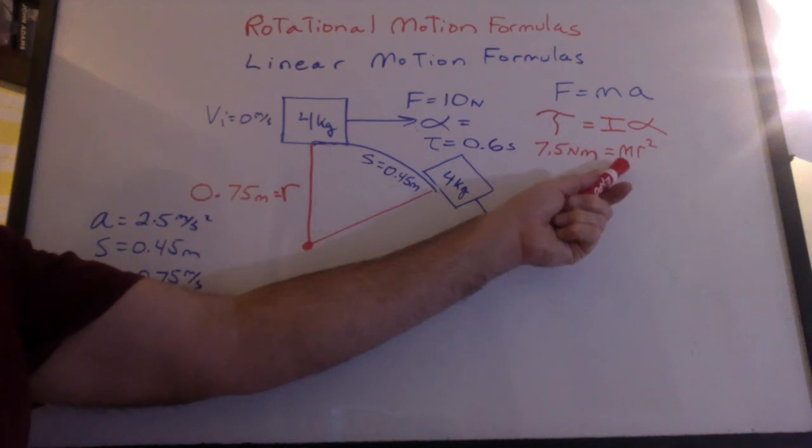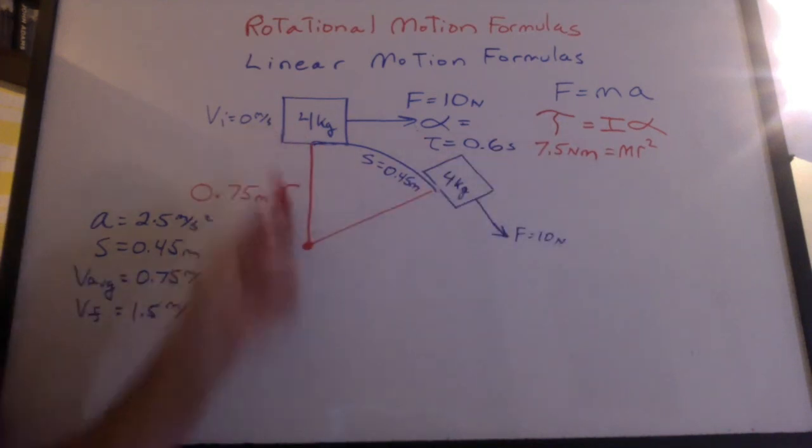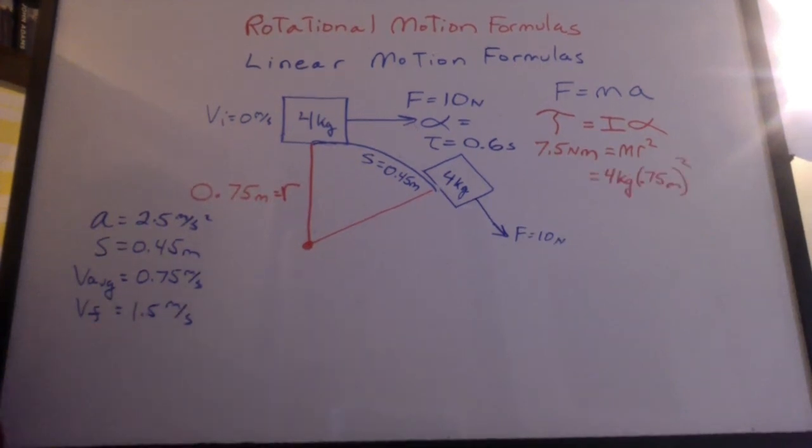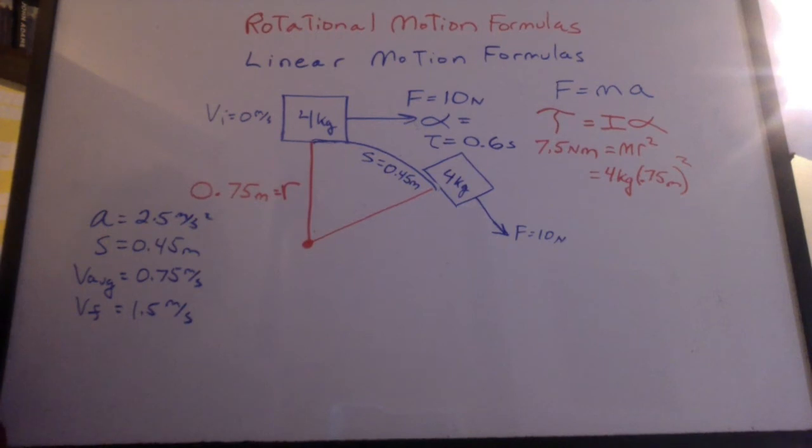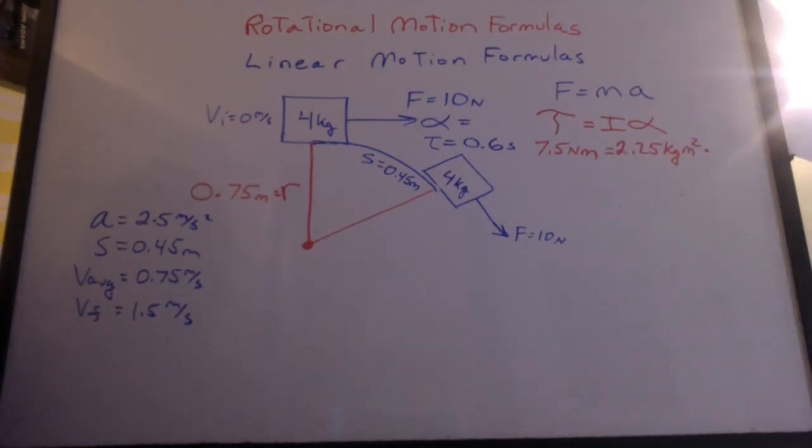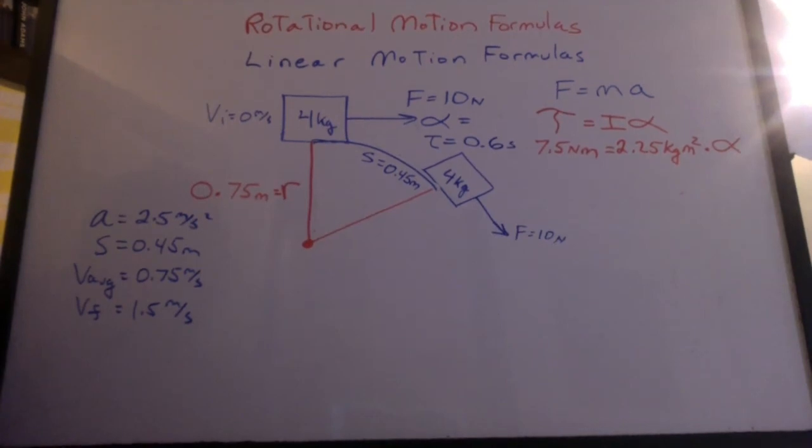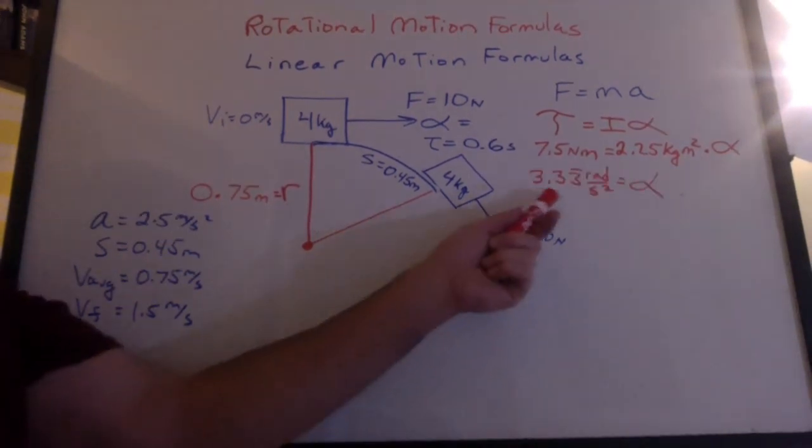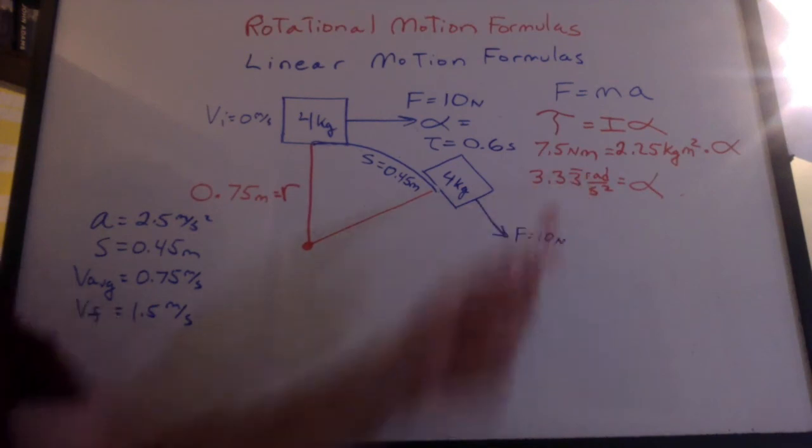Previously, we derived the inertia as mr squared, when all the mass is the full distance from the pivot. That's 4 kilograms times 0.75 meters squared. And we get 2.25 kilograms meters squared times alpha. Now we can solve for alpha. We get 3.33 repeating radians per second squared.